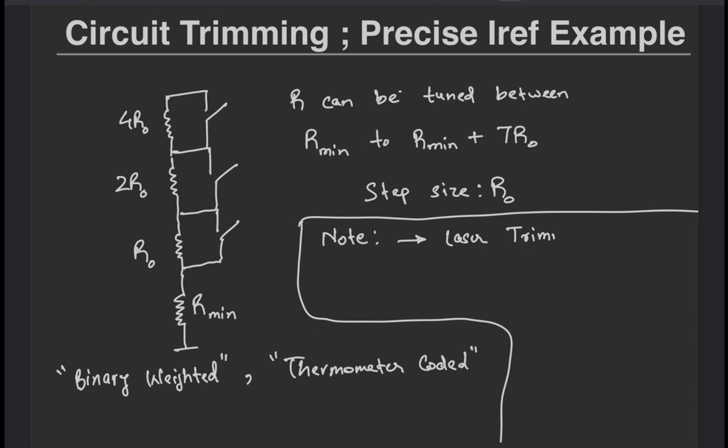There are various types of trimming such as laser trimming in which you use a laser beam to precisely remove the excess resistive material so as to precisely change its value.